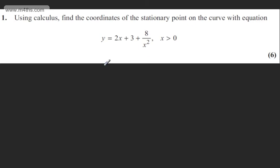The question carries 6 marks. We can state for a stationary point, so for SP, dy by dx the gradient function will be equal to 0. I'm just going to rewrite this as y equals 2x plus 3 plus 8x to the power of minus 2.